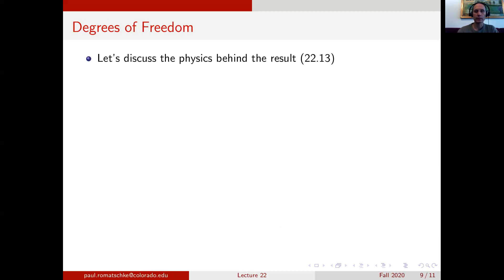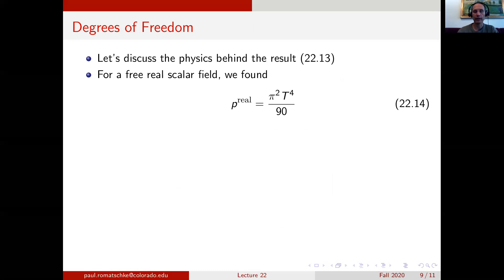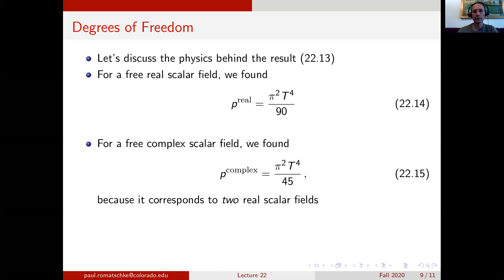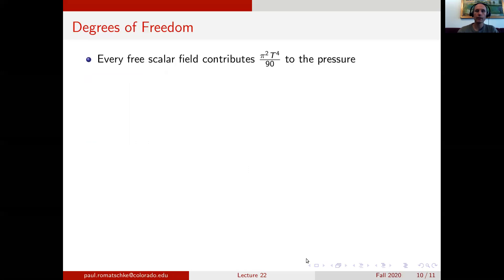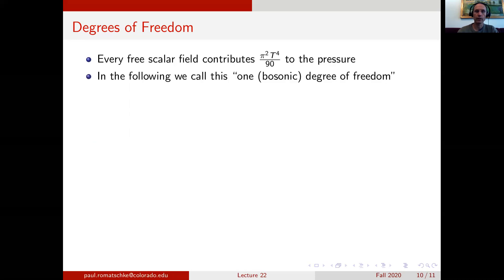Let's now discuss the physics behind this result. For a real scalar field in the free limit, the pressure is pi squared T to the fourth over 90. For the complex scalar field, it is pi squared T to the fourth over 45, because it corresponds to twice the pressure of a free scalar field, or equivalently the pressure of two real scalar fields. It is easy to generalize this to N free real scalar fields: the pressure is N times pi squared T to the fourth over 90, since every free scalar field contributes pi squared T to the fourth over 90. We will sometimes call this one bosonic degree of freedom, where bosonic refers to the fact that we are dealing with scalar degrees of freedom.